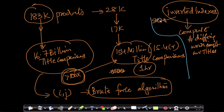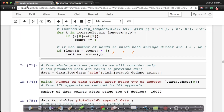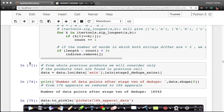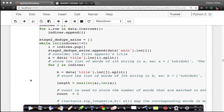Inverted indexes are used by almost every search company — Google, Amazon, Facebook — and any company with search stores data in this data structure. For those who wonder why they're learning data structures and algorithms, here is a very simple use case where advanced data structures can shrink the number of comparisons dramatically.